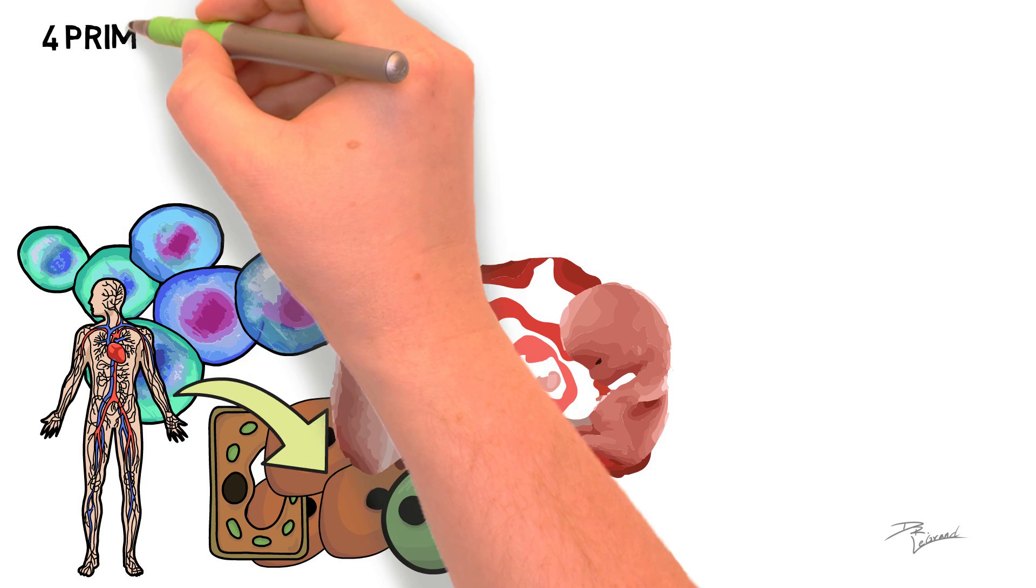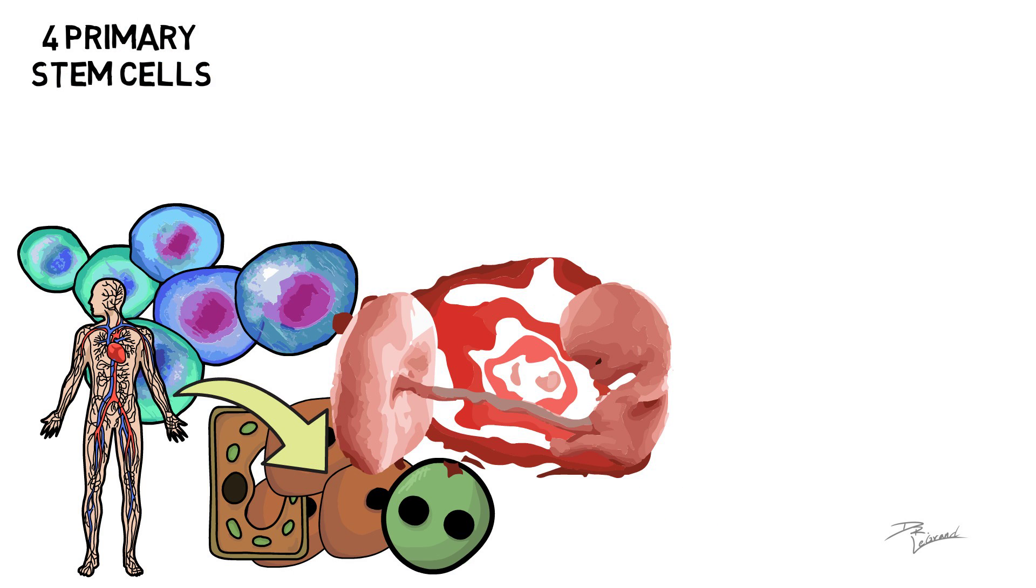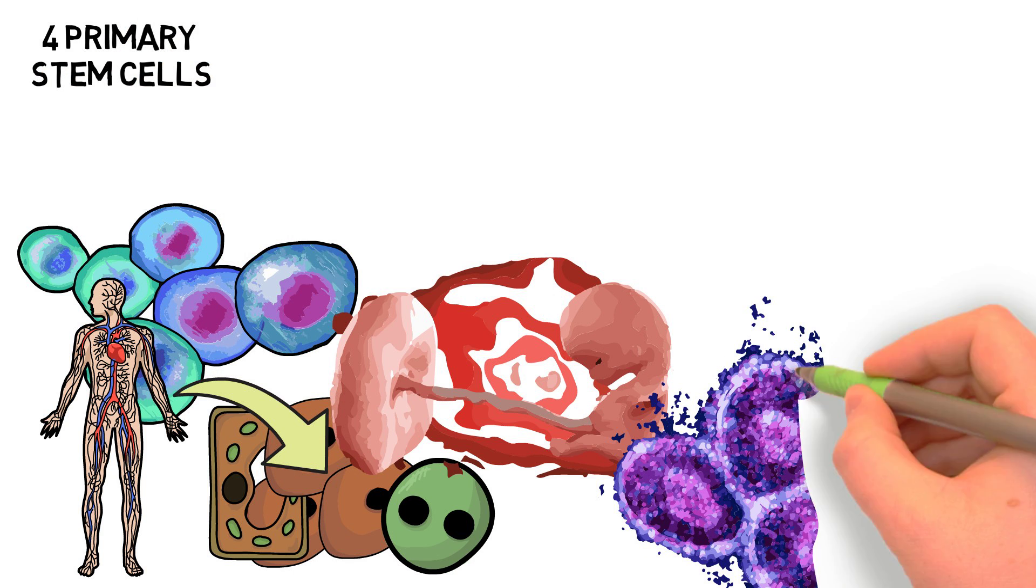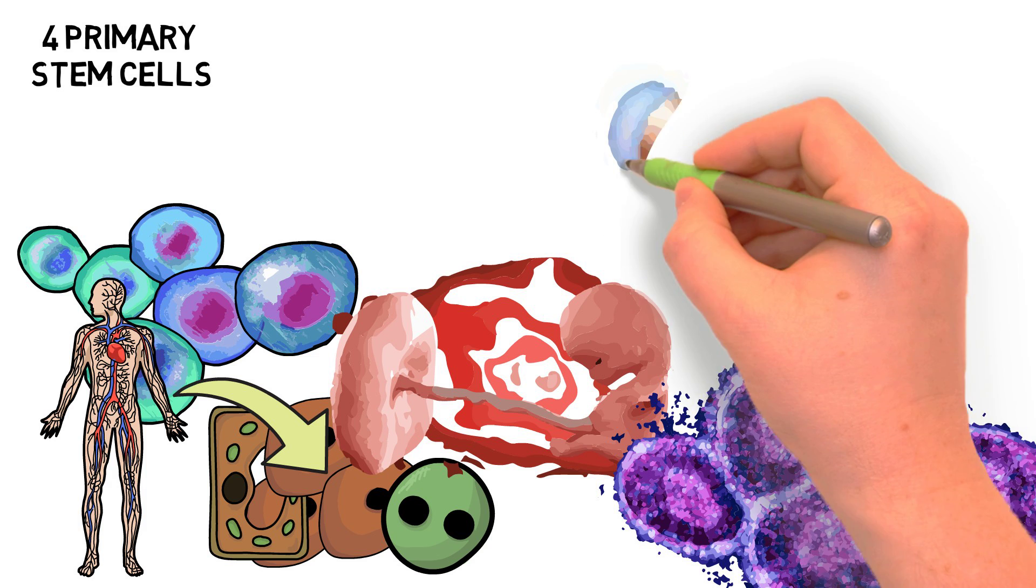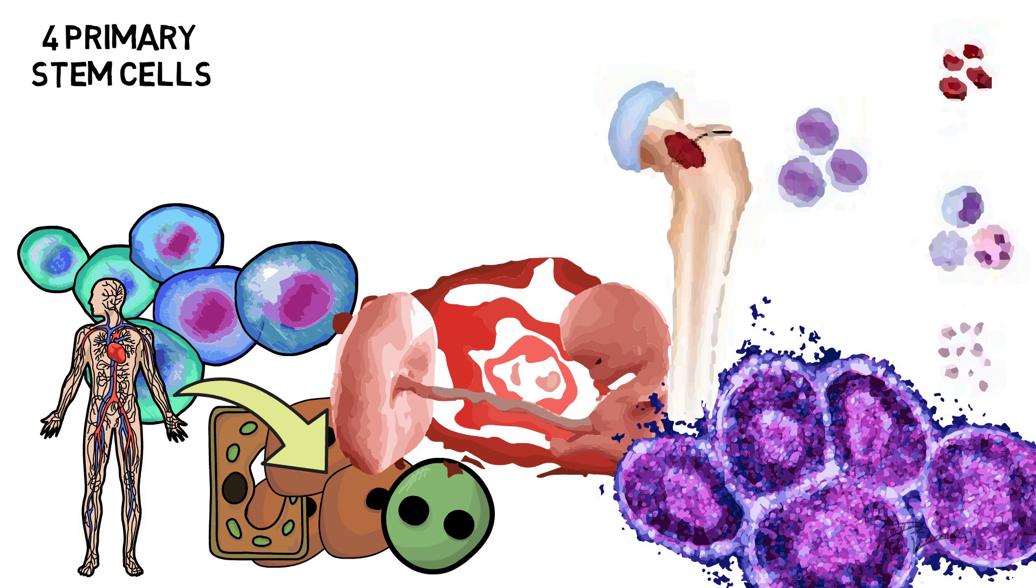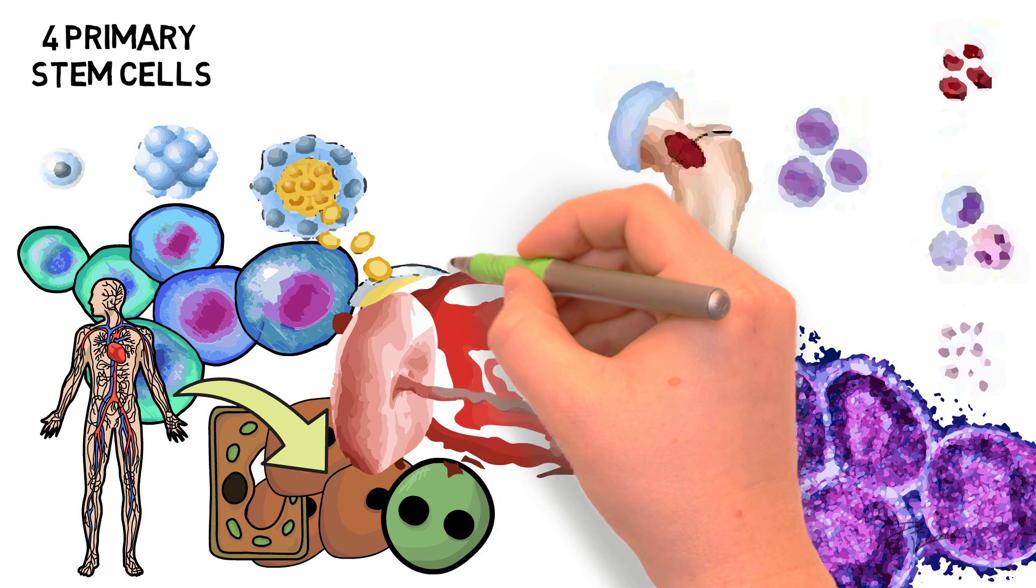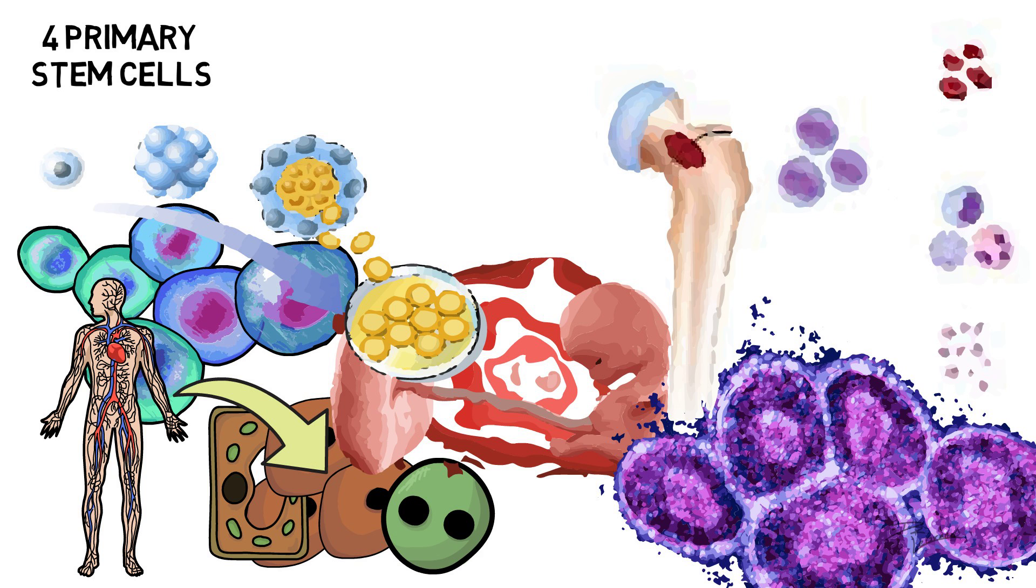The four primary stem cells that have been identified to date include embryonic stem cells, adult stem cells, fetal stem cells, and pluripotent stem cells, often referred to as HIPSCs.